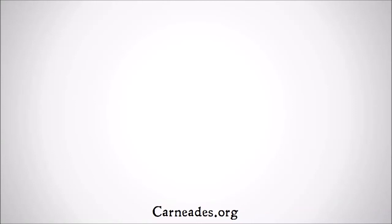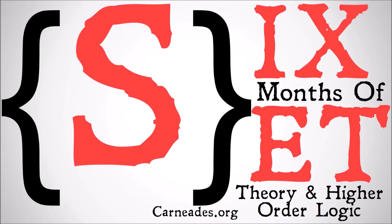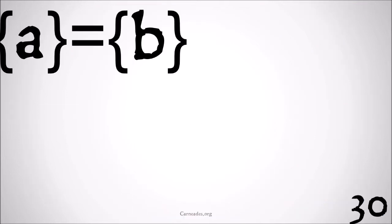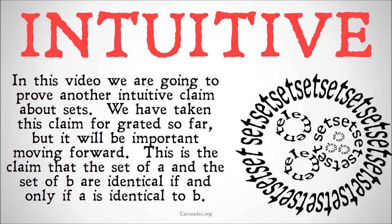Welcome back to carneades.org. Today we're going to be continuing with our series 'Six Months of Set Theory and Higher Order Logic.' In this video we're going to be looking at another proof — proving a very intuitive statement that's going to be very difficult to prove, which is that the set of A equals the set of B if and only if A equals B.